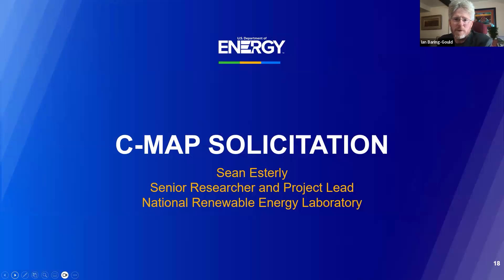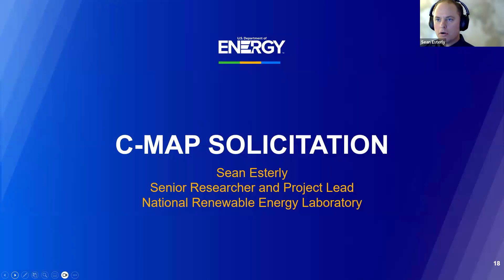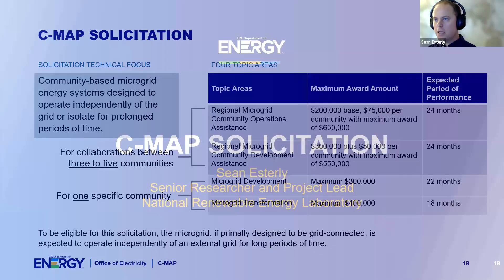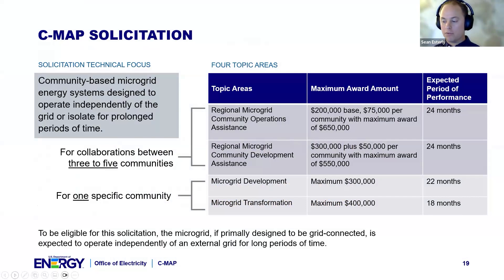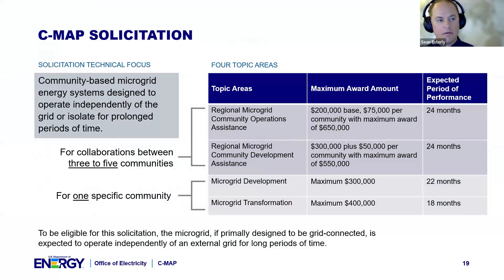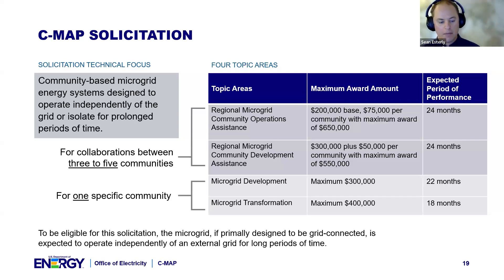I'll now turn it over to Sean to talk more specifically about the solicitation itself. Please, if you have questions, drop them into the Q&A. Specifically on the CMAP solicitation — there is a link that was sent out. You should be able to access it. There are a number of different attachments toward the bottom of that webpage that I'd recommend everyone read through: one is the solicitation itself, and another is the scope of work, which goes into more detail on the different topic areas.